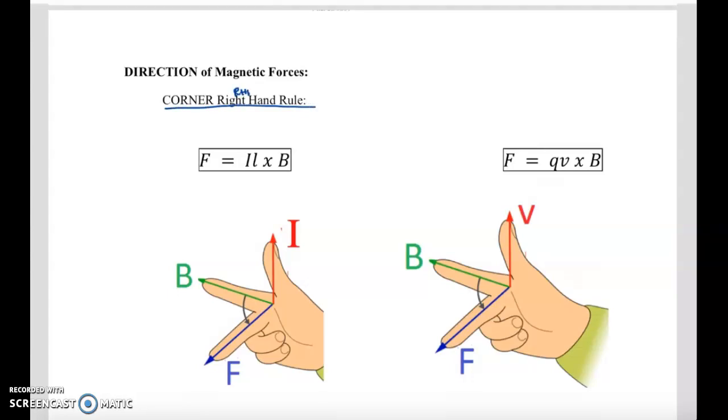Notice that this is called a corner right hand rule. It should remind you of the corner of a room. Last class we learned a curl or grip right hand rule, which again should remind you of what your hand is doing. Okay, so we have our two equations from before. IL cross B and QV cross B. And notice these kind of creepy hands drawn out. I want you to make this shape with your hand. You should notice that your thumb and your pointer finger make a 90 degree angle. Your pointer finger and your middle finger should make a 90 degree angle. And your thumb and your middle finger should also be 90 degrees. This is orthogonal.